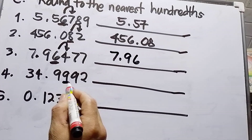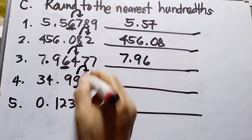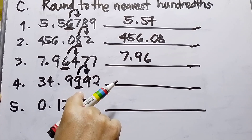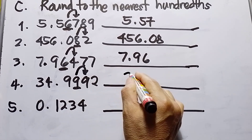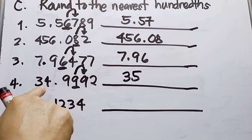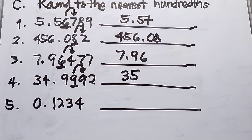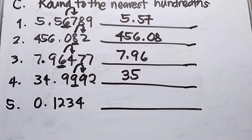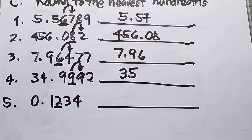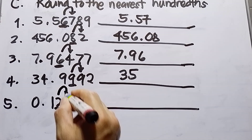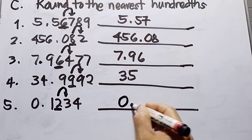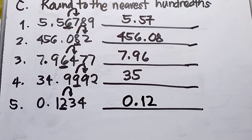Number four: the hundredths place digit gets an arrow pointing to a digit greater than five, so we add one. The hundredths digit is 9, and adding one causes a carry, making the result 35. Number five: the hundredths digit is 2, with 3 to its right. Since 3 is less than five, it remains. Answer: 0.12. That's all for today's topic.